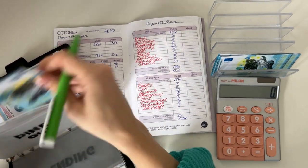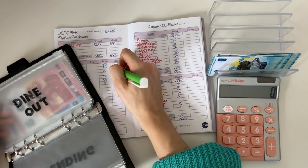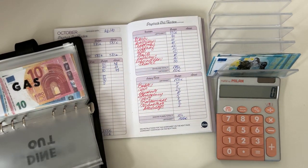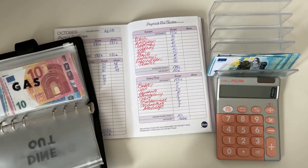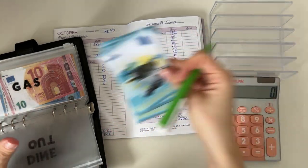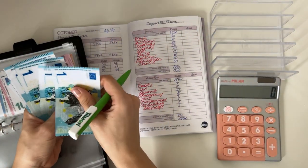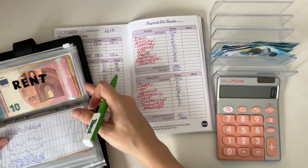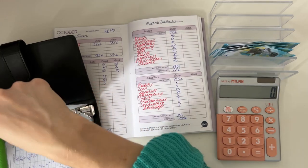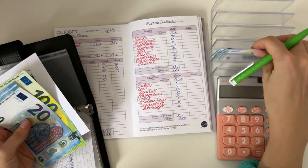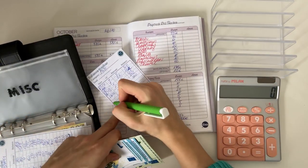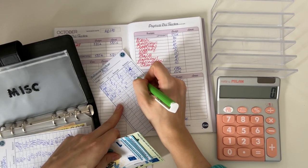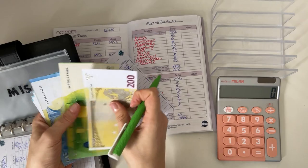And dine out has a rollover of one, so we spent 49 here. And then all of this rollover amount, which is one, two, three, four, five, six, seven, eight euros, we're gonna add into the miscellaneous envelope.